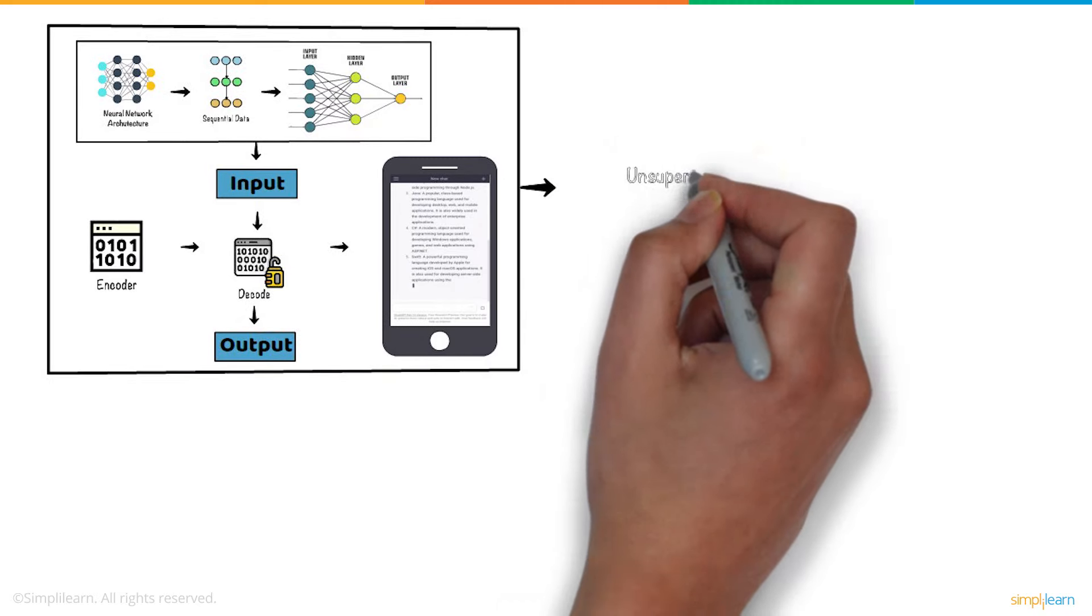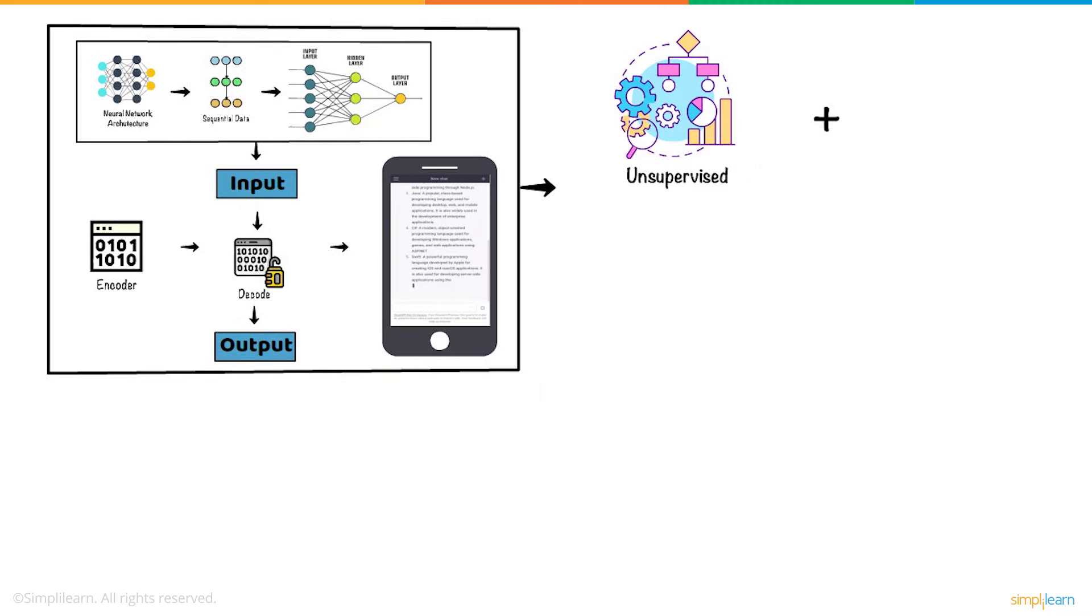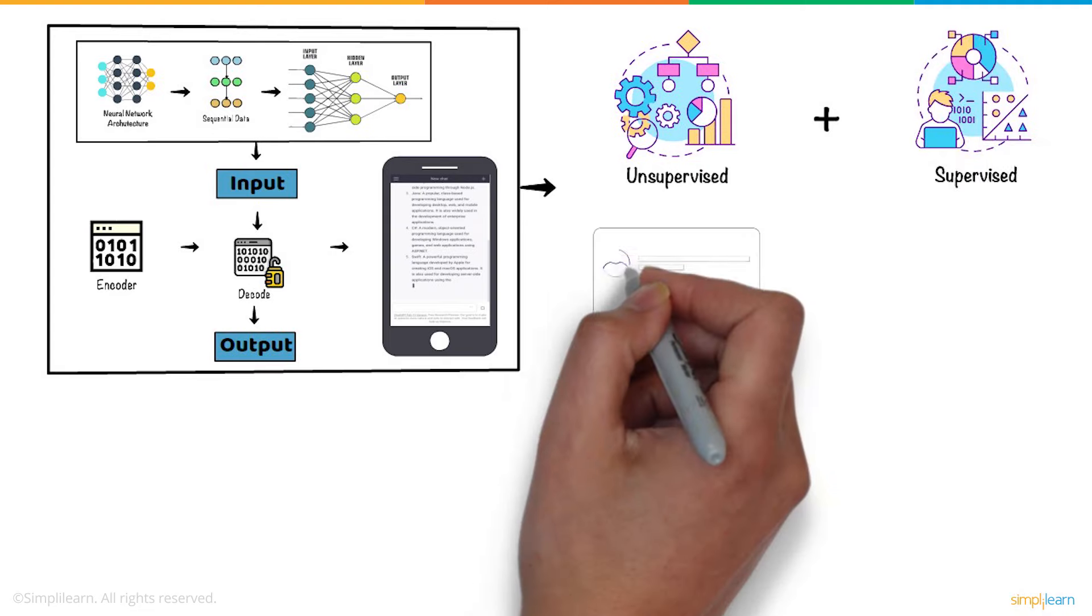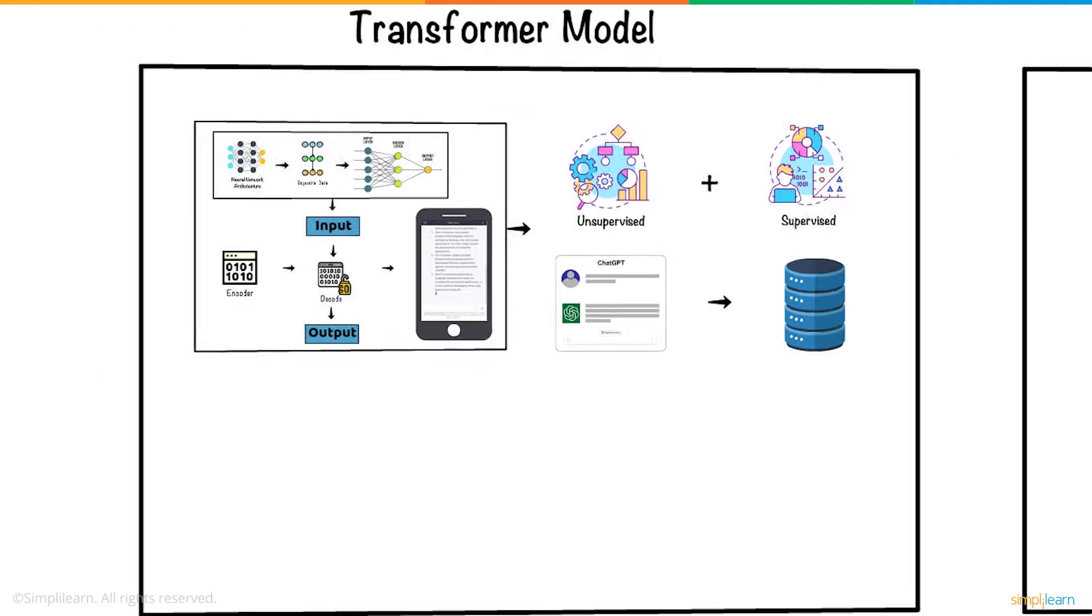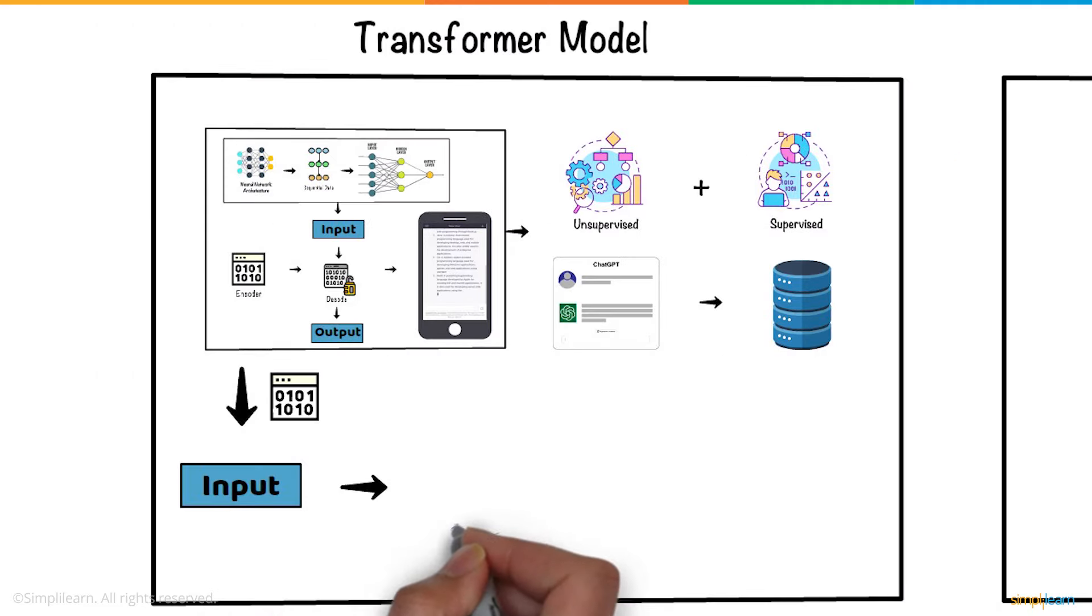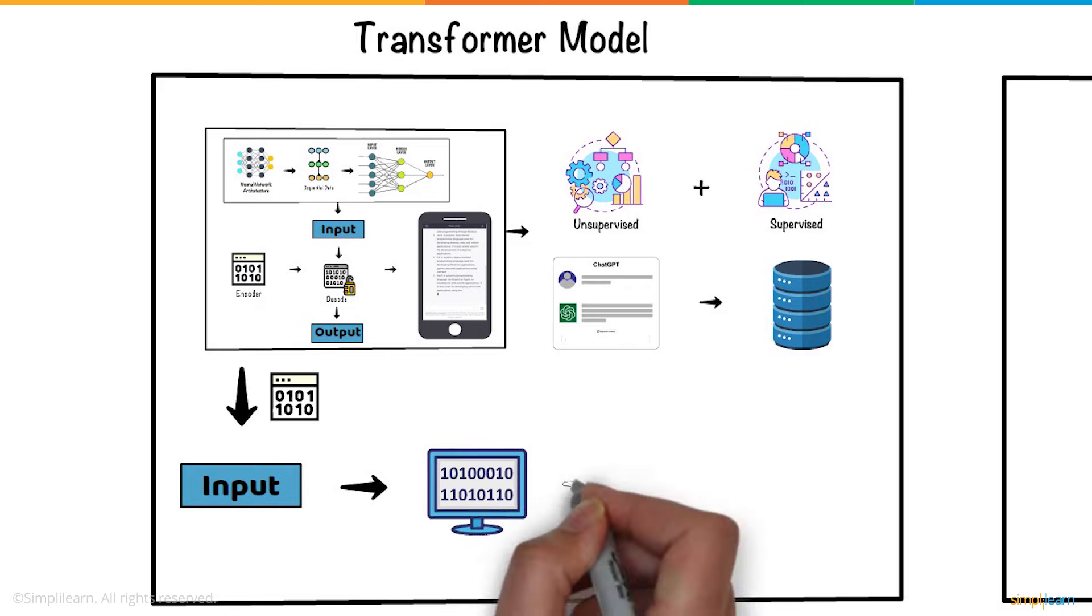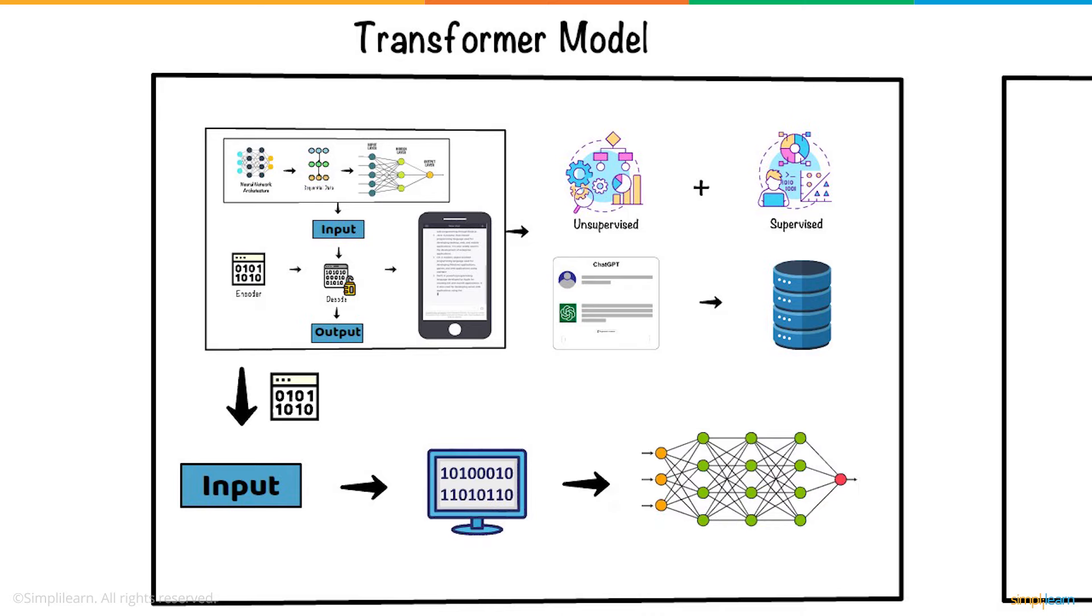The model is trained using unsupervised learning and fine-tuned on specific tasks using supervised learning. For successful completion of tasks, it needs pre-trained data. The model first encodes the input text, then converts it to a numerical representation, which can be processed by the model's neural network. This encoding is done using the embedded layer that maps the word.